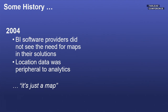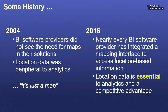A little bit of history: In 2004, no BI providers provided anything related to maps. Location data was peripheral to their analysis — it's just a map, don't really need it. By 2016, every BI vendor had maps represented as a visualization component, including Tableau. It is an essential element of your analysis. By some estimates — it's a swag number — 80% of all data has a location component. Every time you swipe your credit card, every time you open your phone, there is location data being collected. In Europe it's GDPR. California just passed the Consumer Data Protection Act — these are elements of privacy being entered into the calculation of what we do with location-based information.